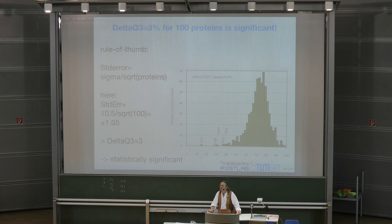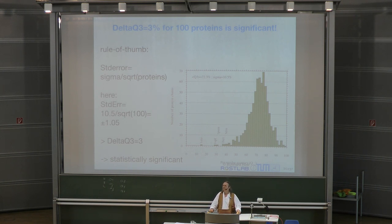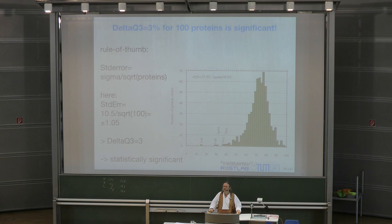Three percentage points is higher than plus or minus 1 — it's about 3 standard errors, which puts it in the 99% category. So it's less than 5% statistical significance — it's 10 to the minus 2. So the statistical significance is confirmed: the difference is statistically significant.